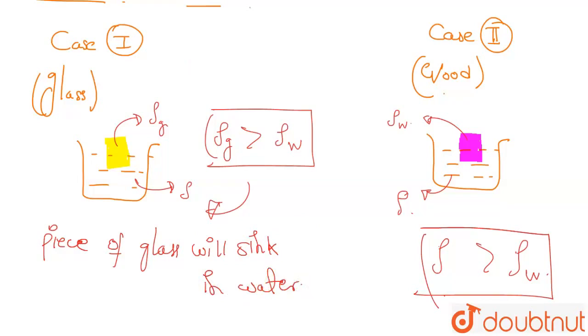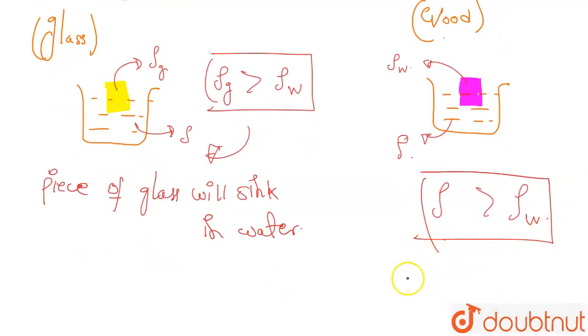Whereas in the case of wood, because wood's density is less compared to water, wood will float on water. This is our answer.